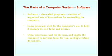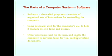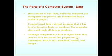Let's see the parts of a computer system — software. Software, also called programs, consists of organized sets of instructions for controlling the computer. Through these programs we can control the computer. Some programs exist to help the computer manage its own tasks and devices. Other programs exist for the user and enable the computer to perform tasks such as creating documents.